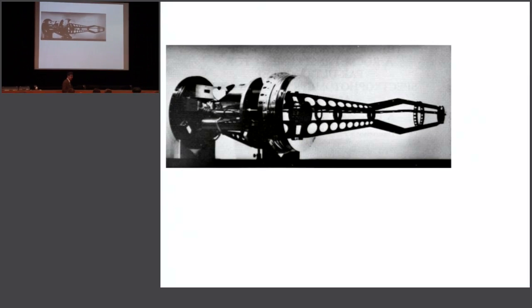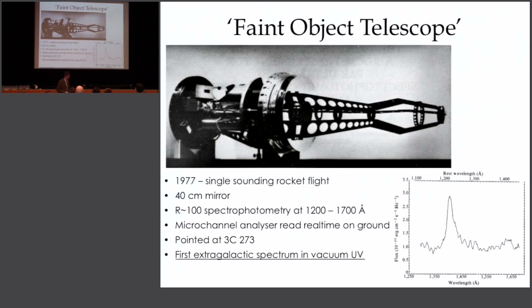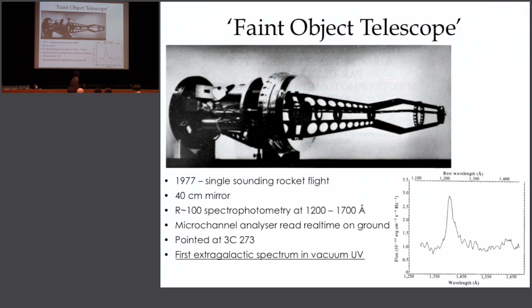So, hands in the air if you recognise this telescope — you've seen this picture before. It's really a ray gun. This is the Faint Object Telescope. It flew in 1977 for about a day above the atmosphere. It's a 40-centimetre mirror there, with a secondary, reflecting light back. This is the first ultraviolet spectrum ever taken of a galaxy or extragalactic object in the UV at low-Z. It has a resolving power of about 100.